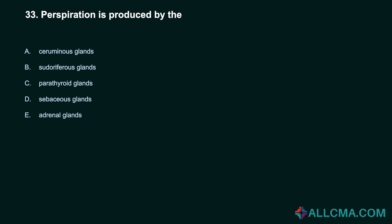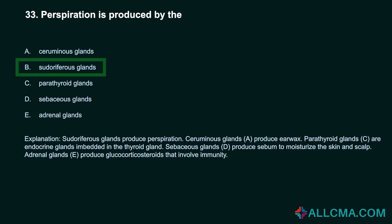Question 33: Perspiration is produced by the: a) ceruminous glands, b) sudoriferous glands, c) parathyroid glands, d) sebaceous glands, e) adrenal glands. Correct answer: B, sudoriferous glands. Sudoriferous glands produce perspiration. Ceruminous glands produce earwax. Parathyroid glands are endocrine glands embedded in the thyroid gland. Sebaceous glands produce sebum to moisturize the skin and scalp. Adrenal glands produce glucocorticosteroids that involve immunity.